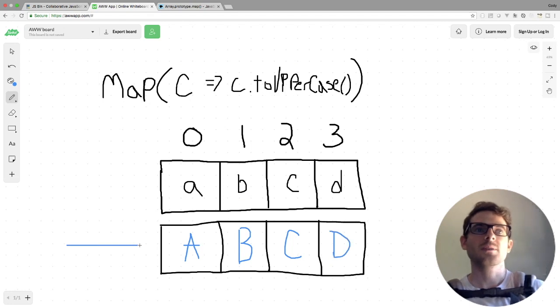If you notice, our new array is going to have capitals A, B, C, and D as the same length of the other one. Basically, every element is just converted to capital case.